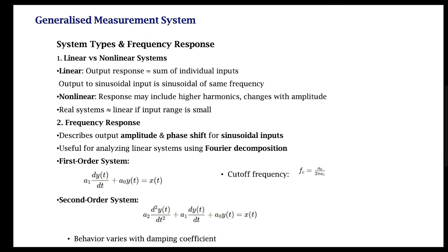Frequency response refers to the amplitude and phase shift for sinusoidal inputs, and we analyze this using Fourier decomposition. For example, a first-order system is described as: a1·ẏ + a0·y(t) = x(t). We can also have a second-order system involving d²y/dt². The behavior of second-order systems varies depending on the damping coefficient.